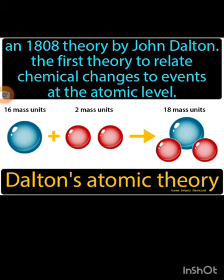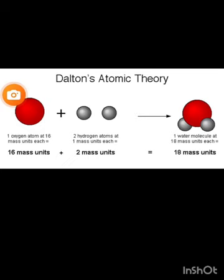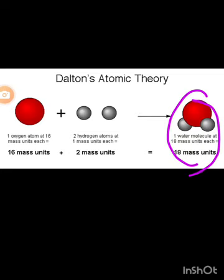Here we can see the formula of water and the structure of water. Oxygen, with a mass of 16, reacts with two hydrogen atoms, each of mass 1, to form the water molecule with a molecular mass of 18. These two hydrogen atoms have a mass of 2 and the oxygen has a mass of 16, giving water its molecular mass of 18.